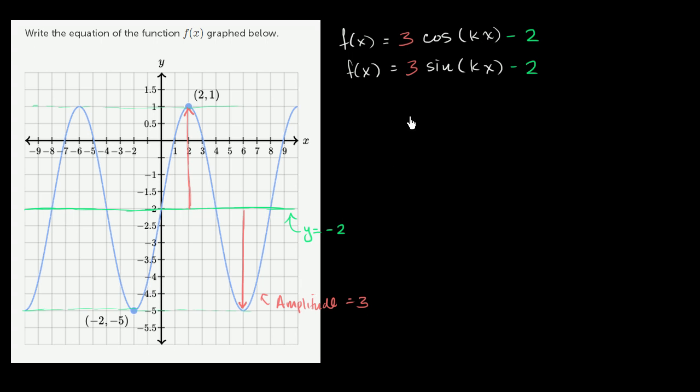So how do we figure out which of these are? Well, let's just think about the behavior of this function when x is equal to 0. When x is equal to 0, if this is kx, then the input into the cosine is going to be 0. Cosine of 0 is 1. Whether you're talking about degrees or radians, cosine of 0 is 1. While sine of 0, if x is 0, k times 0 is going to be 0. Sine of 0 is 0.